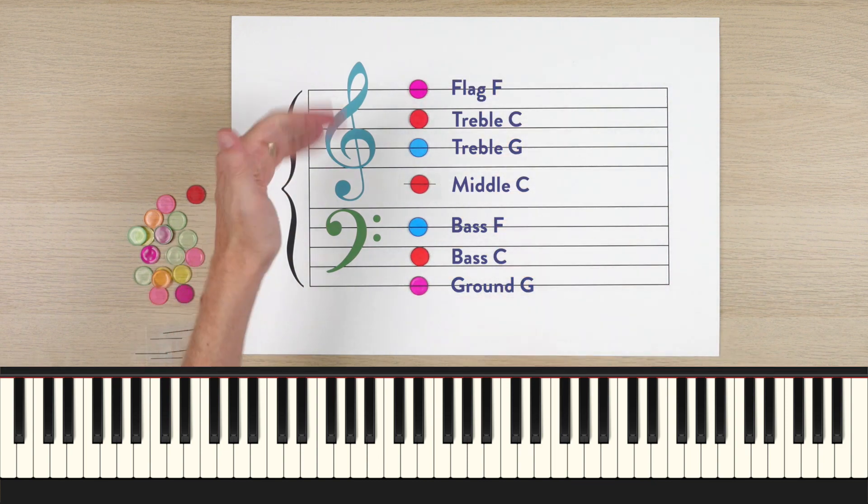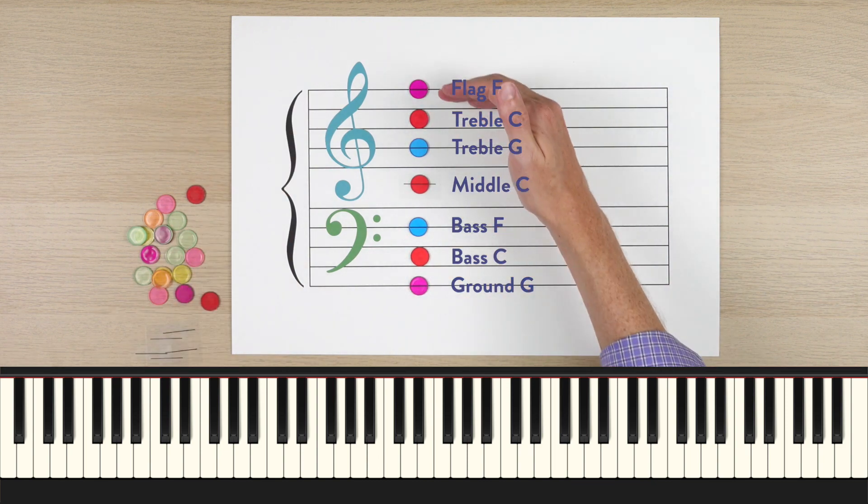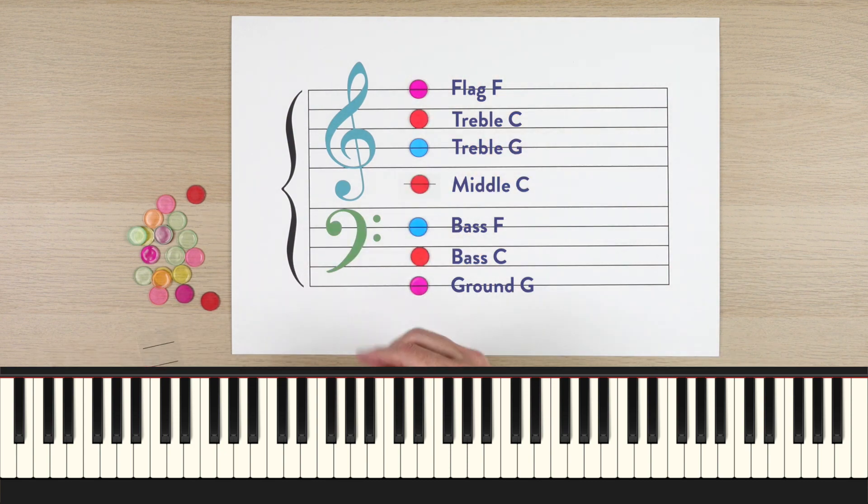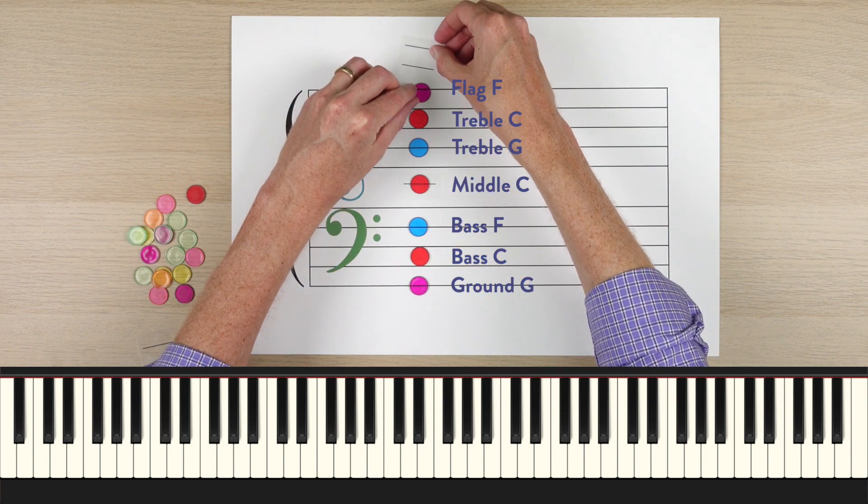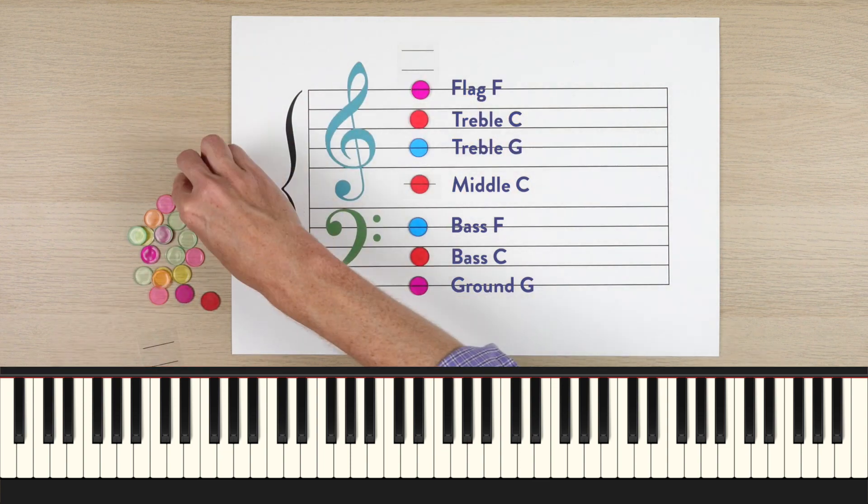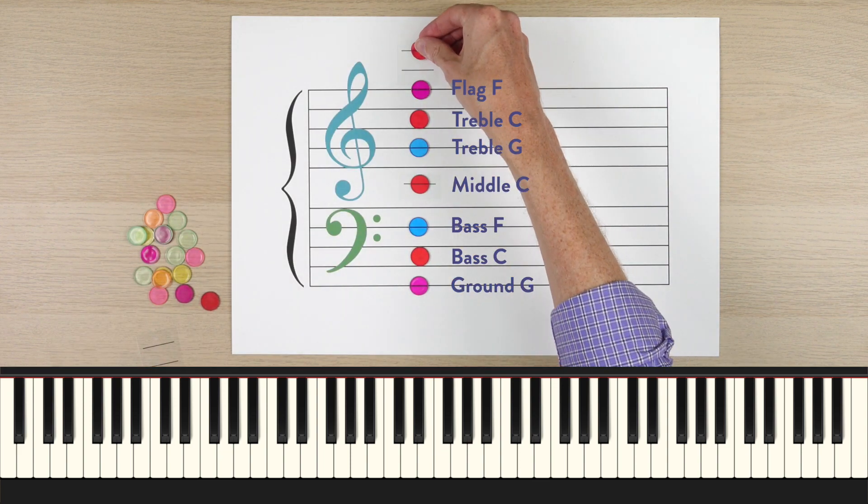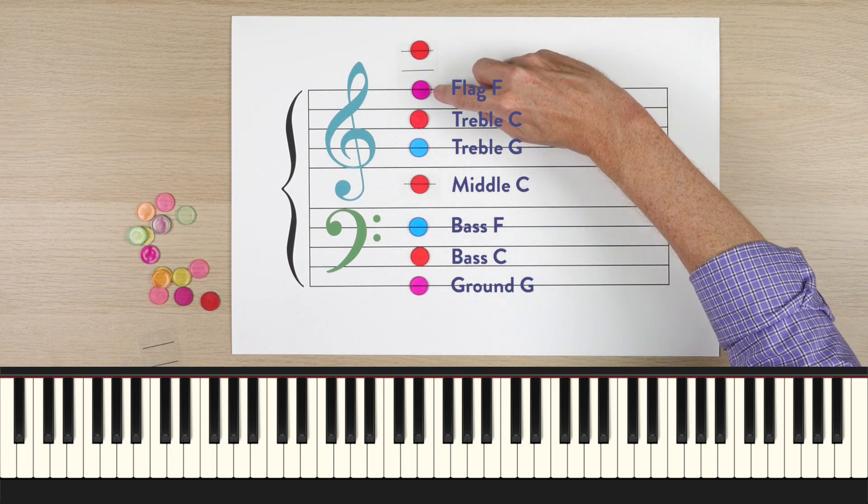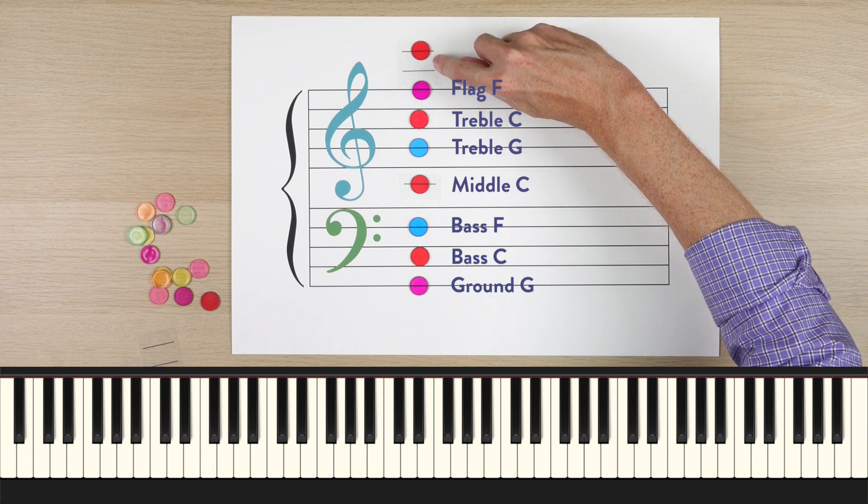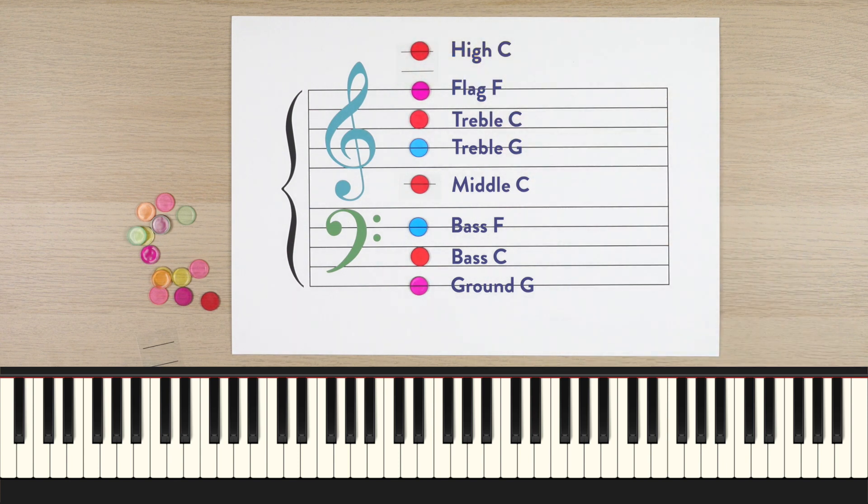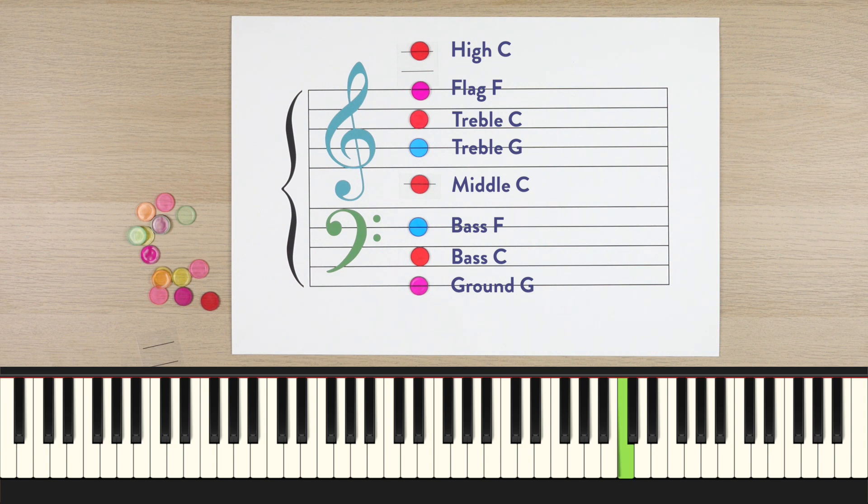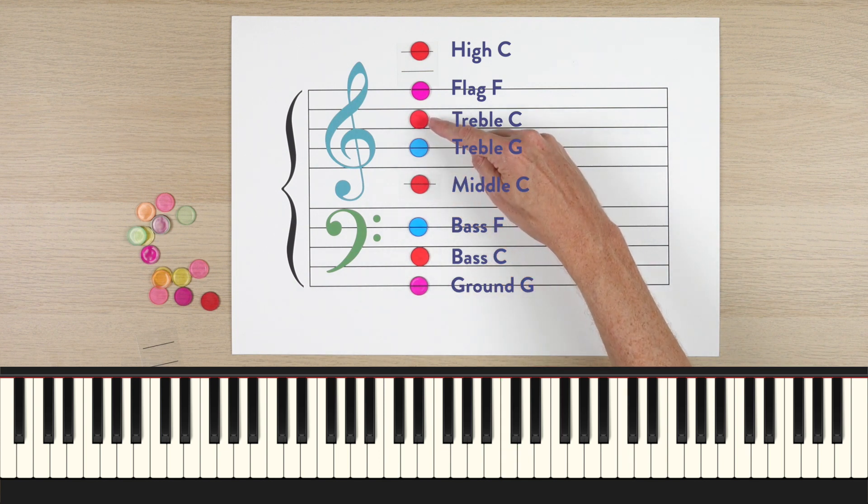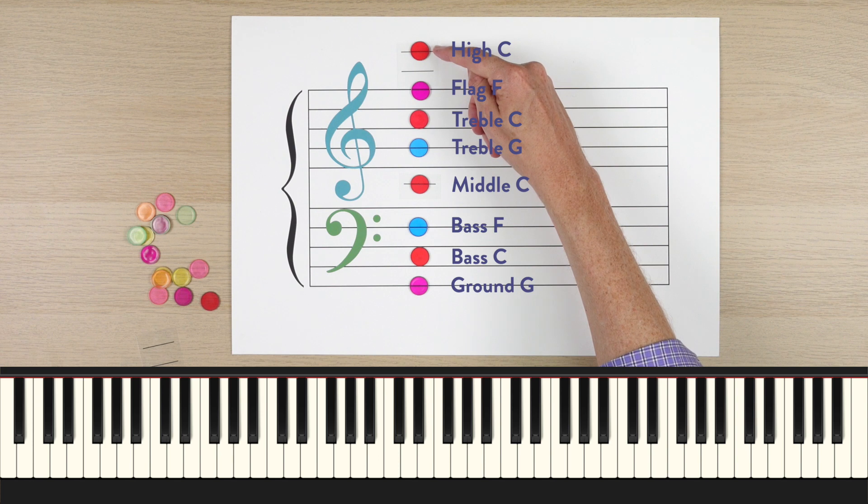Now these guide notes cover most of the staff, but what if you want a really high note? Then you'll need to add ledger lines, and it's helpful to have another guide note up here for when you're reading the ledger lines. And it so happens if you count it up from flag F, G, A on the line, B in the space, C, we get to high C way up here on the piano, two octaves above middle C. Here's middle C, treble C, high C. It's two ledger lines up.